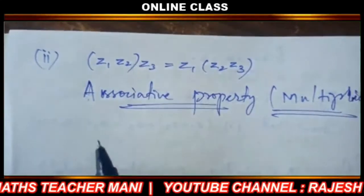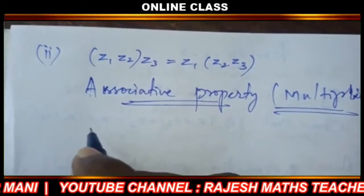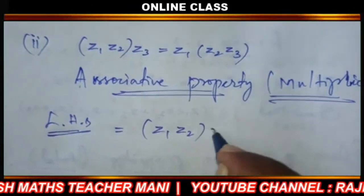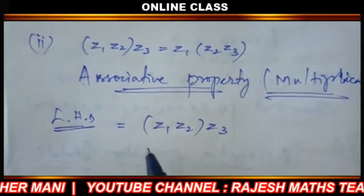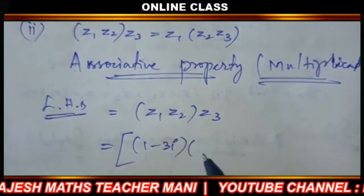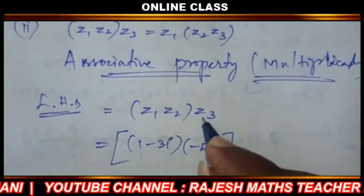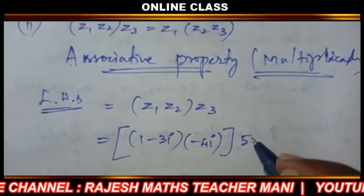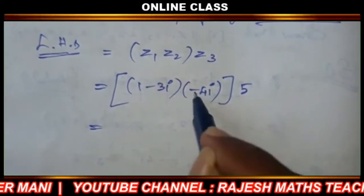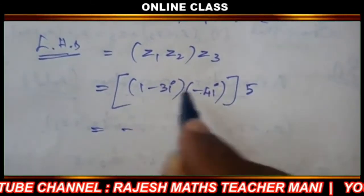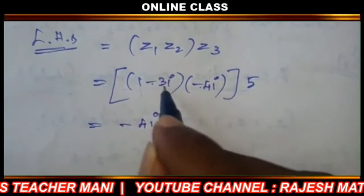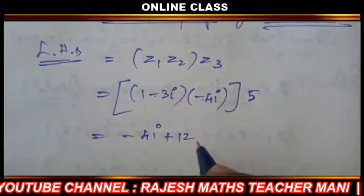This is the formula. First, LHS equals z1 into z2 into z3. Z1 is 1 minus 3i, and z2 is minus 4i. So computing z1 into z2: 1 minus 3i multiplied by minus 4i. Minus into minus gives plus, so 3 into 4 is 12, i into i is i squared.